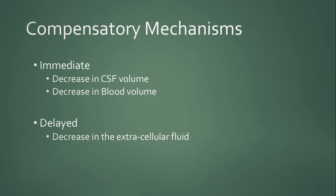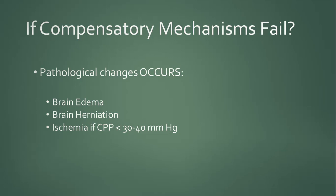The compensatory mechanisms activate in sequence: first a decrease in CSF volume, then blood volume, and finally excess fluid decreases. If these mechanisms fail, there will be irreversible changes including cerebral herniation. Pathological consequences include brain edema, brain herniation, and ischemia, especially if cerebral perfusion pressure drops to 30–40 mmHg. It is important to act before these pathological changes develop.